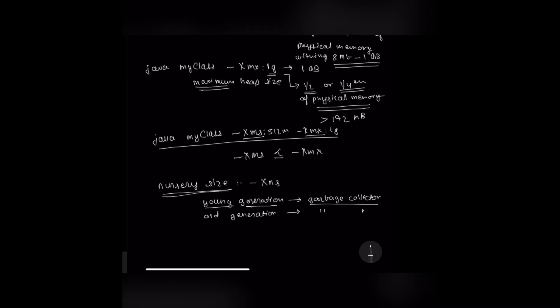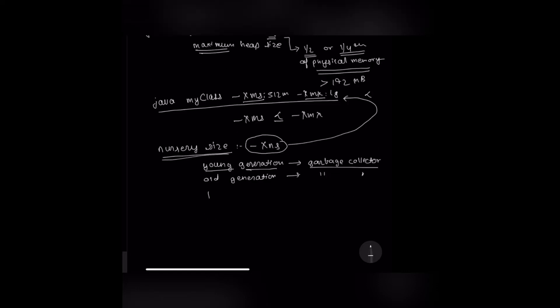The nursery size is a sub-part of the heap, so it cannot exceed the maximum heap size. We can define the nursery size — for example, as 10 MB. Depending on our use case and after a memory study of our application, we can define it according to the size we want.